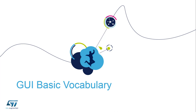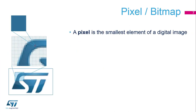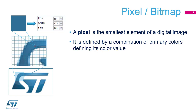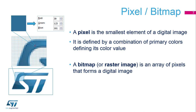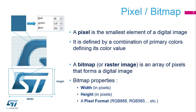Since no specific knowledge was required for this workshop, we must present some basic 2D graphics terms. A pixel is the smallest element of a digital image. Pixels are usually rectangles but are only associated with a color value, not a size, because the size of a pixel may vary across the same screen. A pixel is defined by a combination of primary colors. A bitmap, or raster image, is an array or grid of pixels forming a digital image, defined by its width, height, and a pixel format such as RGB888 or RGB565.